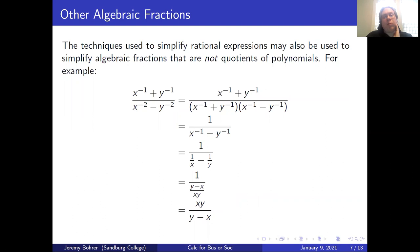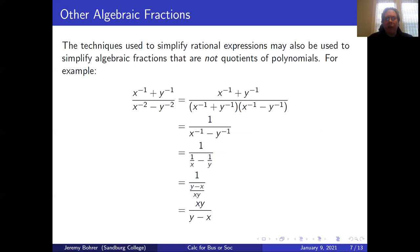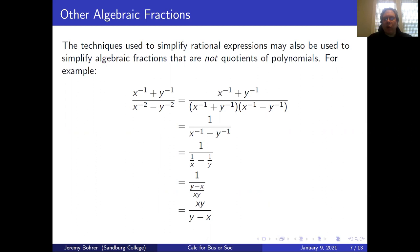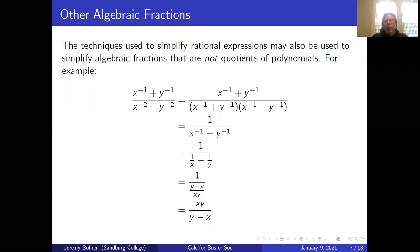The techniques used to simplify rational expressions may also be used to simplify algebraic fractions that are not quotients of polynomials. For example, we can simplify (x⁻¹ + y⁻¹) over (x⁻² - y⁻²) by using the fact that x⁻² - y⁻² is a difference of squares. That's (x⁻¹ + y⁻¹) over (x⁻¹ + y⁻¹)(x⁻¹ - y⁻¹), which simplifies to 1 over (x⁻¹ - y⁻¹), or 1 over (1/x - 1/y), which is 1 over (y-x)/xy, and flipping that gives xy over (y-x).